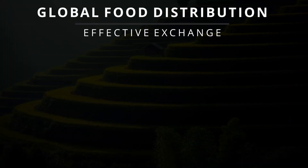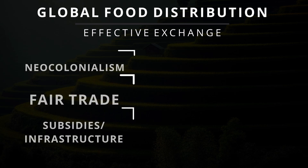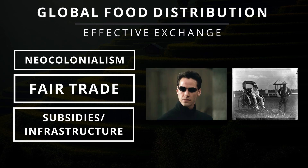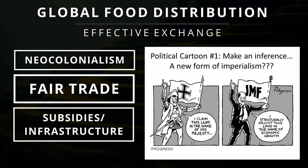There are a few things that contribute to the effective exchange of agricultural products around the world, and those include neocolonialism, fair trade, subsidies, and infrastructure. Think of this as the political side of food distribution. Neocolonialism represents a new form of colonialism that powerful countries are utilizing, such as the US and China. Instead of completely dominating countries as they used to, now they provide a false sense of political freedom, all the while maintaining relations for the sake of extracting money.